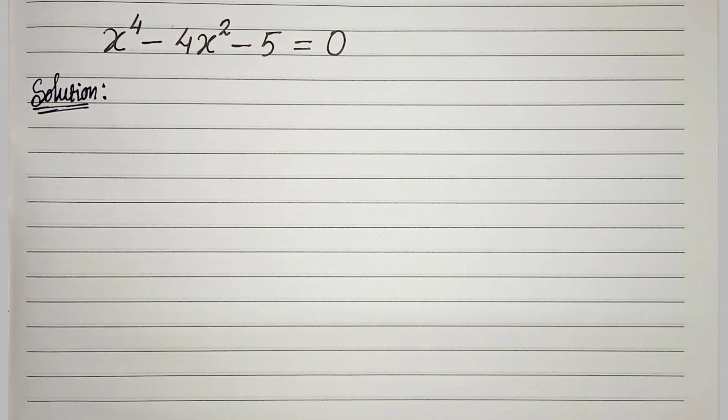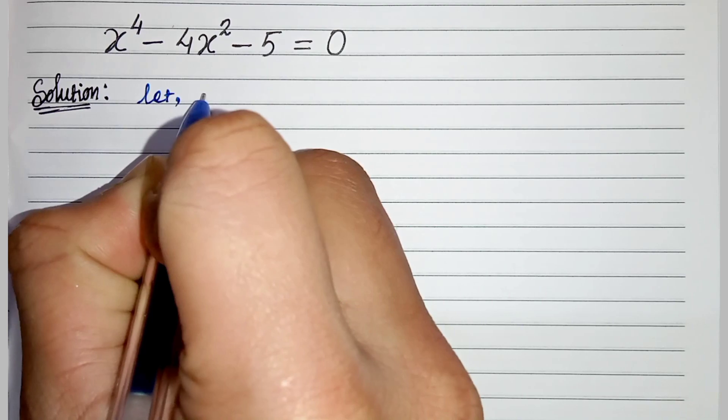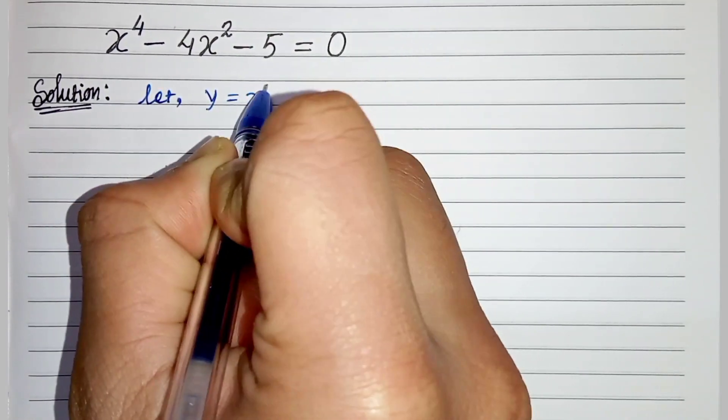First of all, let us consider x square as y. So let y equals x square.